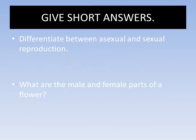Question number two: what are the male and female parts of the flower? Write the male parts on one side and female parts on the other. The male parts are the anther and filament — together called stamen. The female parts are the stigma, style, and ovary — together called carpel. Stamen consists of anther and filament, while carpel consists of stigma, style, and ovary.